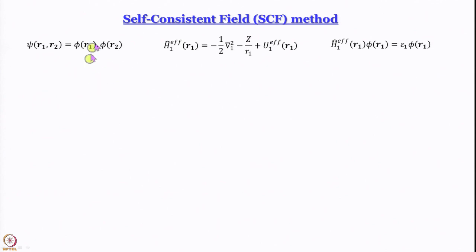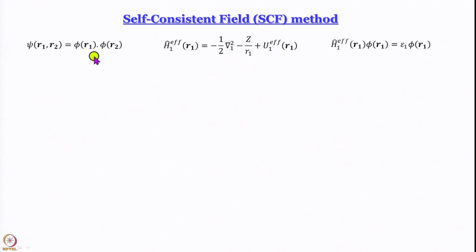Electron 1's wave function phi(r1) is defined only by its own coordinates, nothing to do with r2; phi(r2) is only a function of r2, nothing to do with r1. We are pretending that the electrons move around as if the other one is not there — when they come close they repel, when far away they repel less, but there is no correlation in the movements of the two electrons. That is what the orbital approximation essentially suggests.